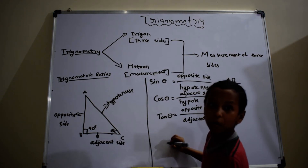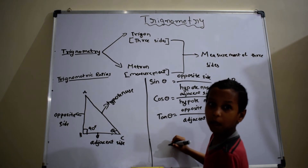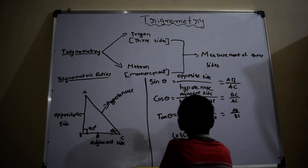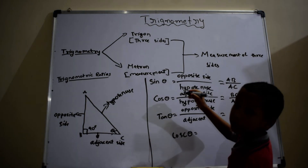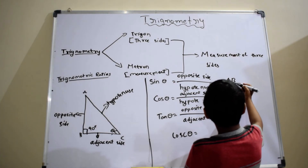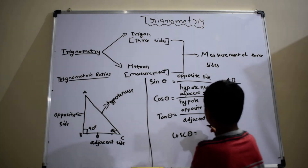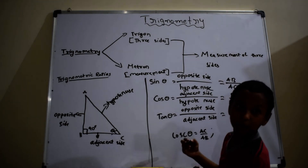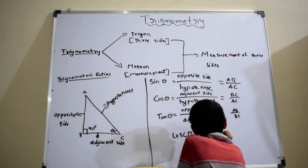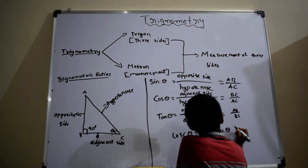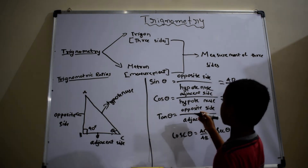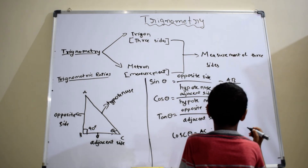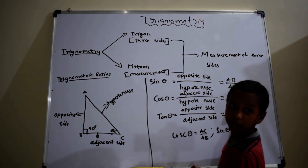The next ratio is cosec theta, which is equal to AC by AB, and it is the reciprocal of sin theta. The next is sec theta, which is equal to AC by BC.